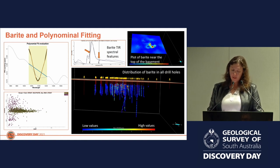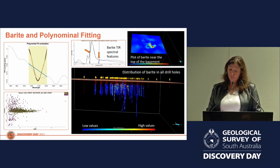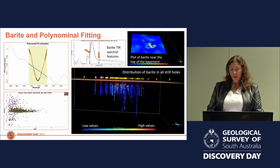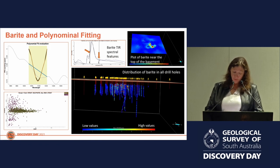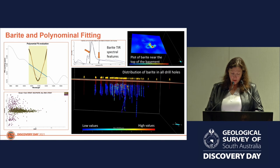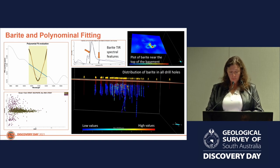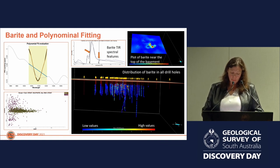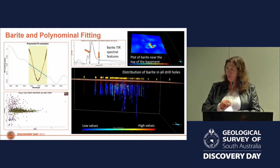We know that barite occurs in the barren centre of the deposit, so we used a different technique called PFIT, or polynomial fitting — a spectral index used to model very small features of a particular mineral to map its distribution. In this case, we use the feature around 10,140 nanometres, and as you can see, barite is detected in the middle of the hole quite rapidly. We can now quickly model the infertile parts of the IOCG system, identifying these gangue minerals prior to ore processing. The next step is to get spectra for things like hyalophane — a barium-rich feldspar — and see how we can trace them using spectral methods.